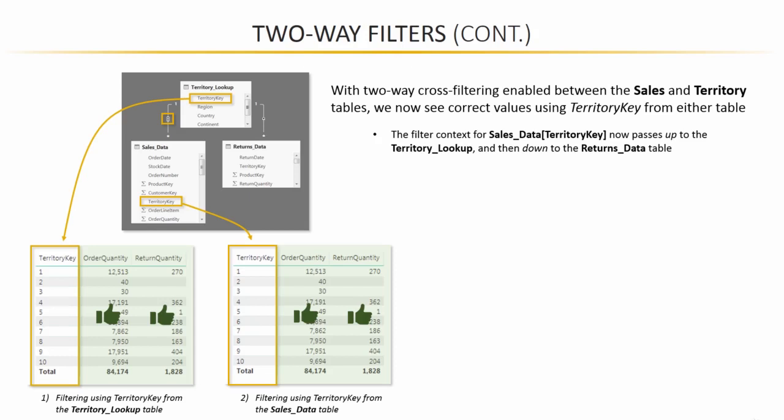What's new now is that pulling in the territory key from the sales data will not only return proper order quantities, as you'd expect, but that filter context is now able to travel up to the territory lookup, which then filters territories based on which ones generated sales, and then that filter context, in turn, passes down to the returns data table, which filters accordingly as well. So we've essentially created a way to transmit filter context from within the sales data table all the way to the returns data through the territory lookup.